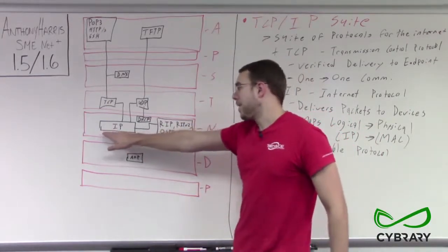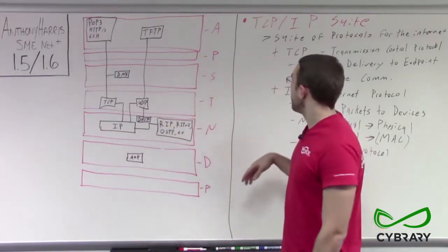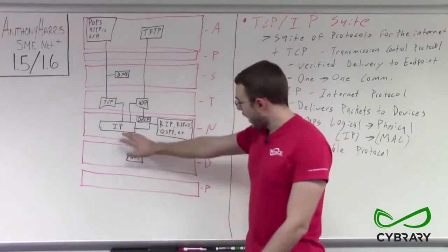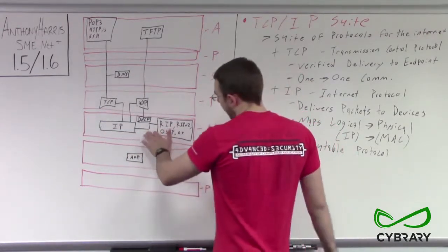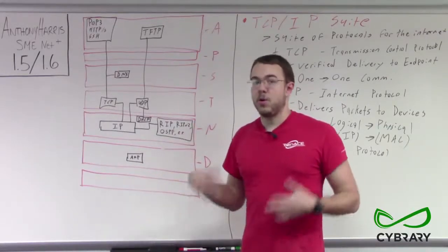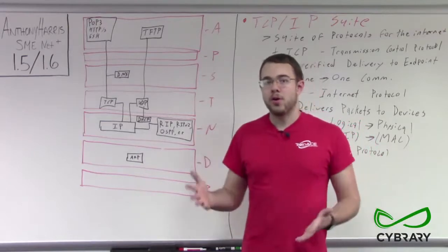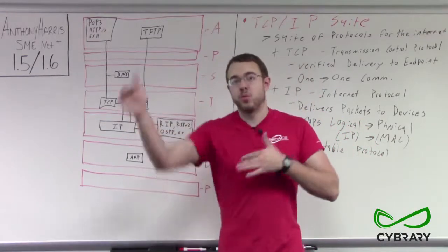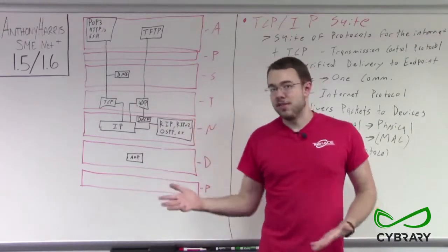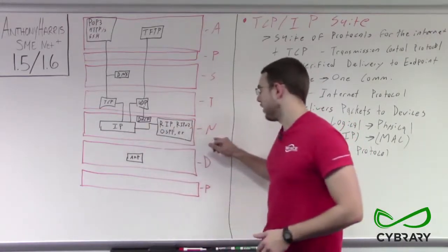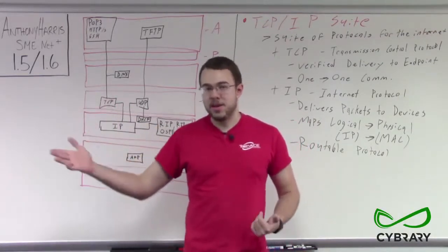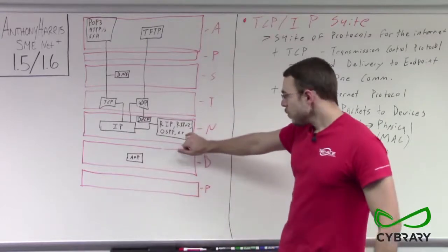We also have IP here, which is a big part of our TCP/IP suite. We see how it relates to a lot of our different protocols and different layers. On the same layer as IP, we also have our different routing protocols. Routing protocols allow our routers to work with IP addresses and find the best routes to deliver packets to certain IP addresses, so they work on the networking layer because they're routing data and directly working with IP addresses.